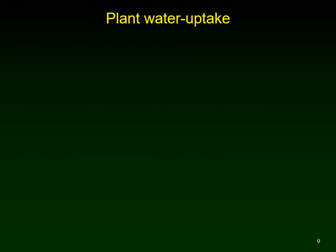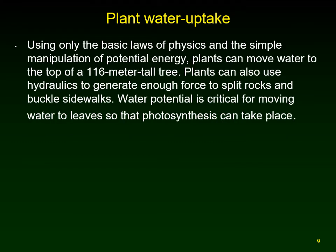We're going to talk about how water is taken up by plants from the soil, moves through the plants, and is used for photosynthesis and transpiration out of the leaf. Plants are amazing because they use basic laws of physics and potential energy to move water from the soil underground all the way up to the top of a huge tree — in the tropical rainforest up to 116 meters tall — without a heart to pump the water, doing all of this with simple physics.